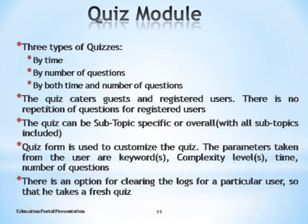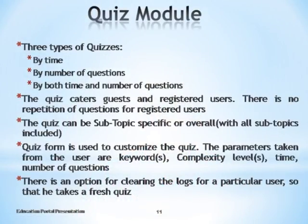Now explaining the quiz module in detail: we have three types of quizzes — by time, by number of questions, and by both. The quiz caters to guests and registered users. The advantage for registered users is that there will be no repetition of questions, and they can clear their logs. Quiz customisation is based on keywords and complexity level, so a user can opt for an easy test or a broader selection.